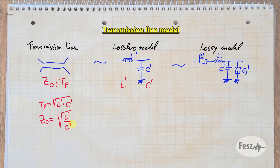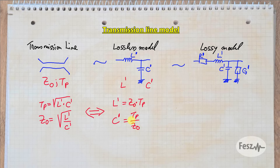You can also go the other way around. These two models are very important, since they can accurately represent the same structure but under different use cases. While an electrical interconnection does behave like a transmission line at high frequency, it also behaves like an LC circuit at low frequency.